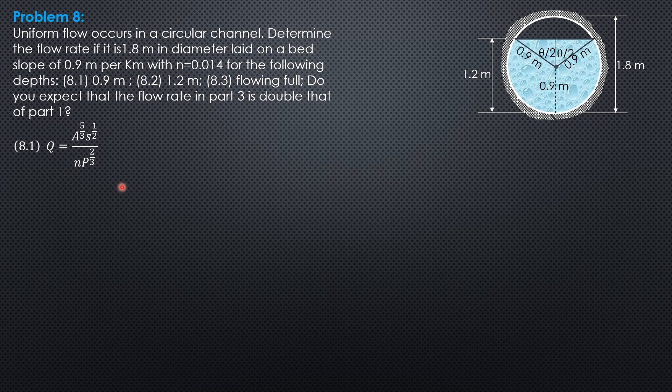So for part 1, the area is area of semicircle, which is pi over 2 times radius squared, or pi over 2 times 0.9 squared. So it is 0.405 pi square meters. The perimeter is pi r if it is half full. So pi times r, and r is 0.9, so 0.9 pi meters.